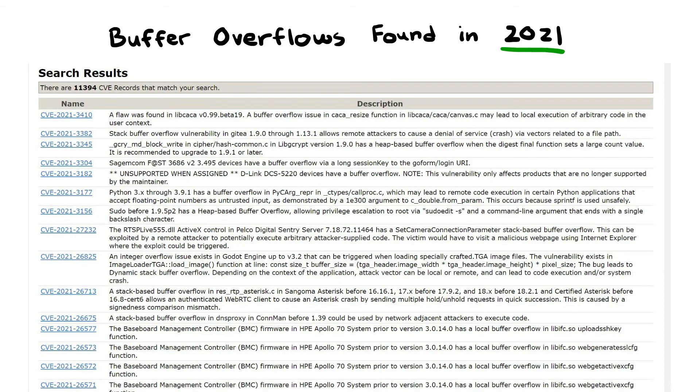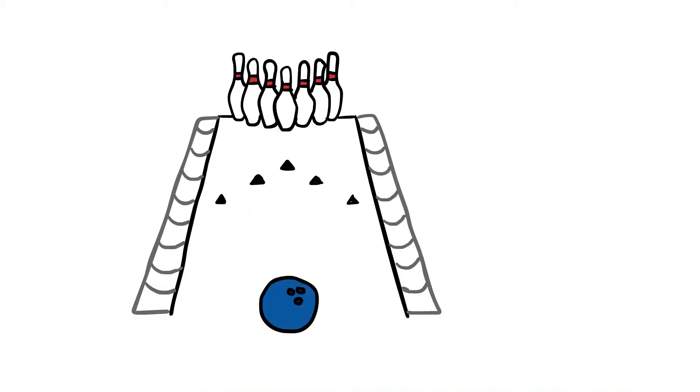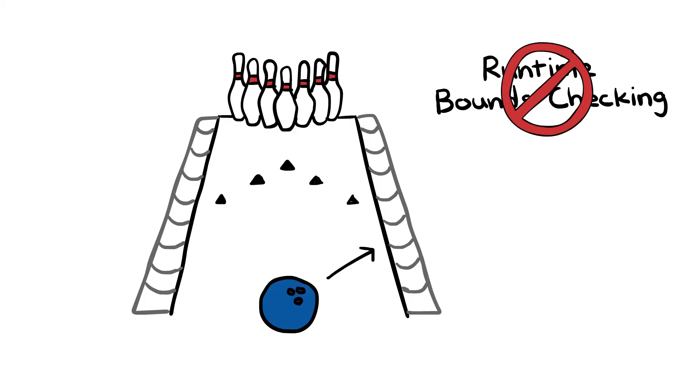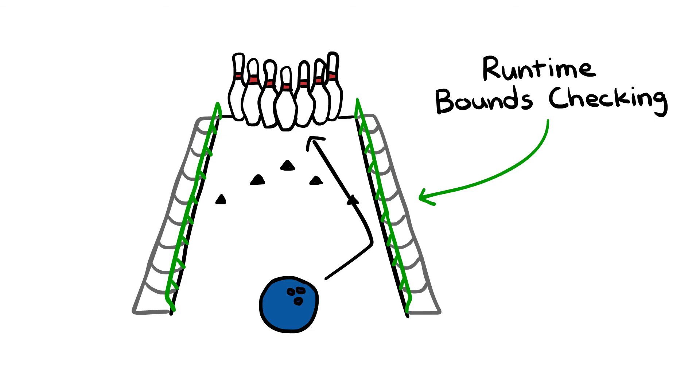There are many cases where buffer overflows have been discovered in software that has been in use for decades. I like to compare the entire situation to bowling, where runtime bounds checking is like the bumpers. Sure, you could say that without the bumpers, it's the bowler's fault if they gutter the ball. But why not remove that option entirely? For most, bumpers would probably improve their score by getting rid of the possibility for a gutter ball.